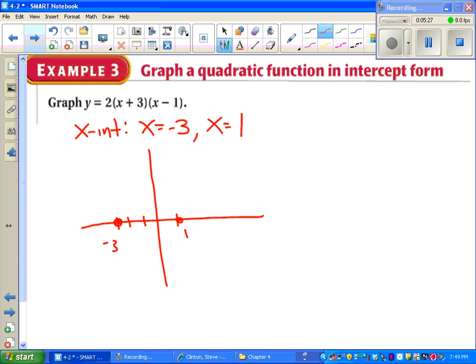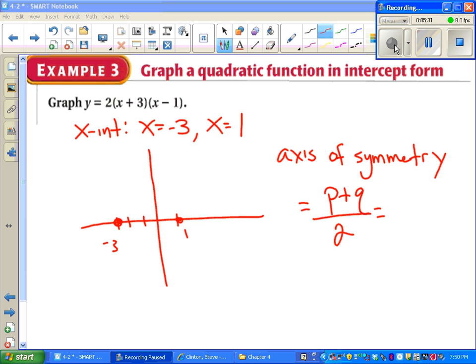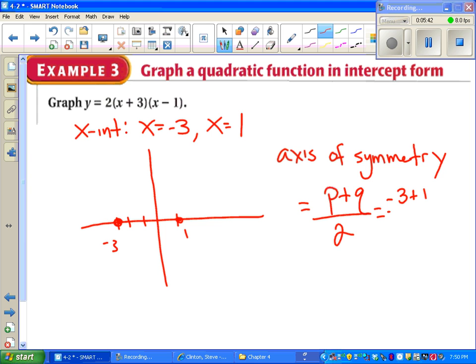I also can get my axis of symmetry without too much difficulty. We've got a formula that says to just go P plus Q over 2. Because it's right in the middle of the two X intercepts. In this case, it's going to be negative 3 plus 1 over 2, which is negative 1. When you draw that dotted line for the axis of symmetry, it should be right in the middle. If not, something went wrong.